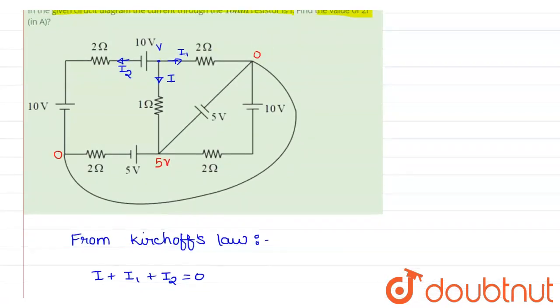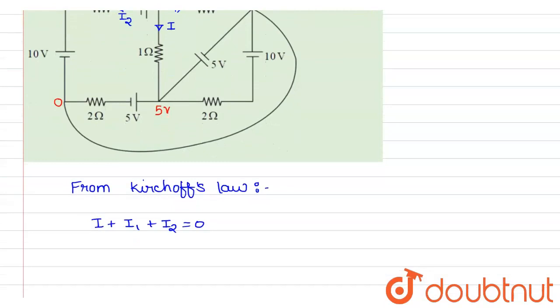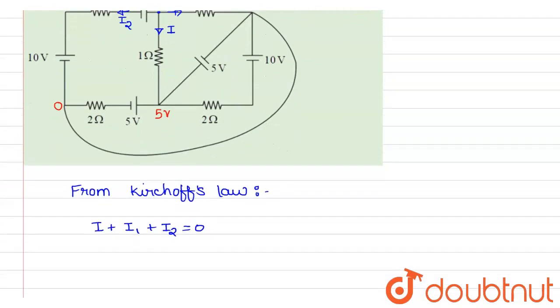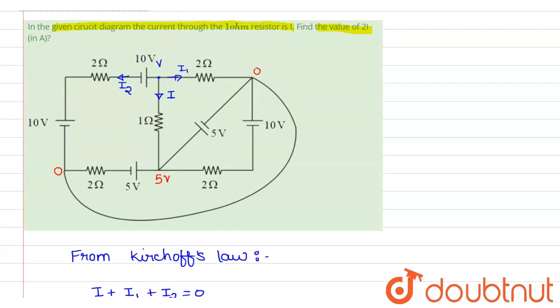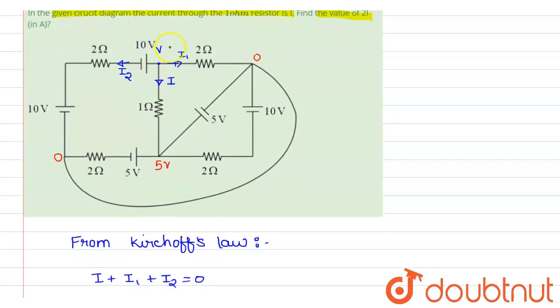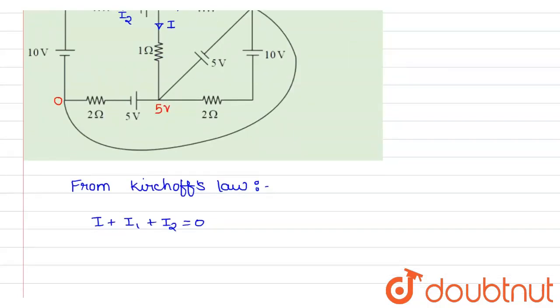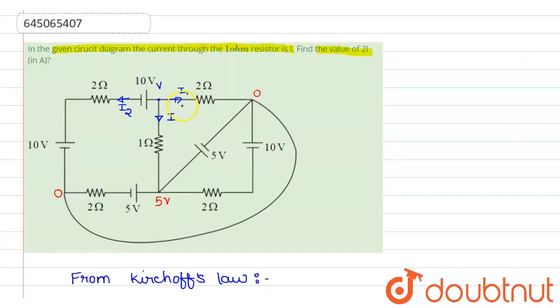We can write current in the form of voltage and resistance. So if we convert current i in terms of voltage and resistance, v crosses a resistance of 1 ohm and the potential difference will be v minus 5V. So I am writing here: (v - 5)/1, which is simply (v - 5).